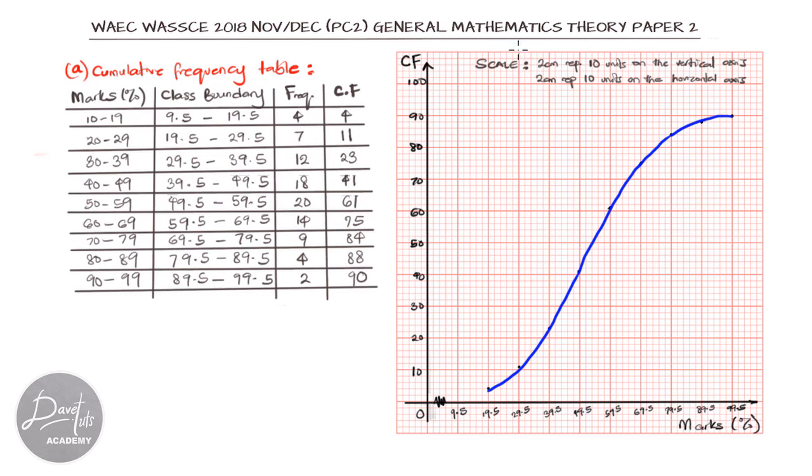In our next question, we are asked to find the median. We are asked to find the value of the median mark. What we need to note is that cumulatively, all of our frequencies add up to 90. The median will be half of that 90, and that is 45. So we go to our vertical axis and locate 45.